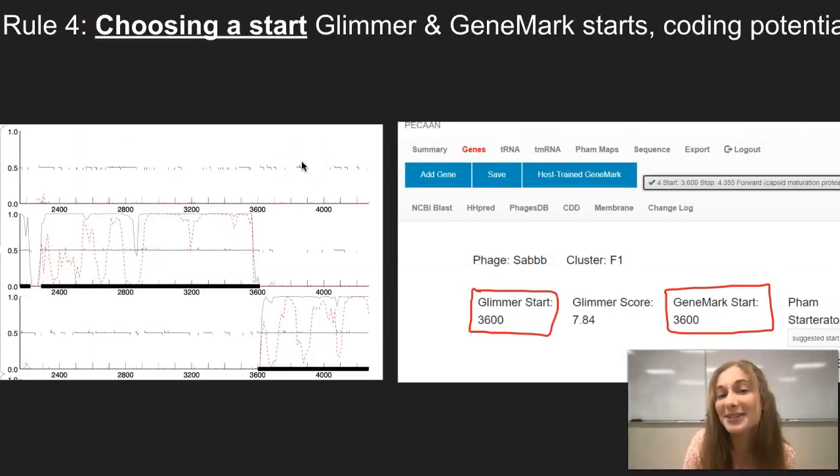Rule number four helps us choose a start through different databases like Glimmer and GeneMark. On this screenshot of Pecan, Glimmer and GeneMark are both calling the potential start for this gene at 3,600. Sometimes they'll disagree with each other and sometimes they'll agree with each other like in this situation. And then on the left, this screenshot is GeneMark.